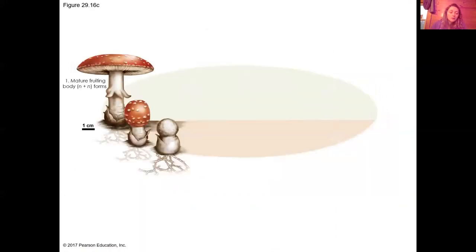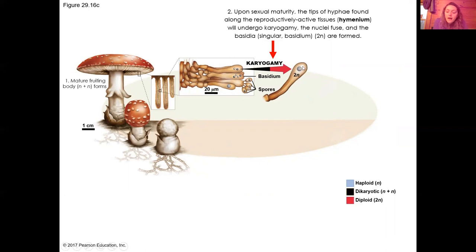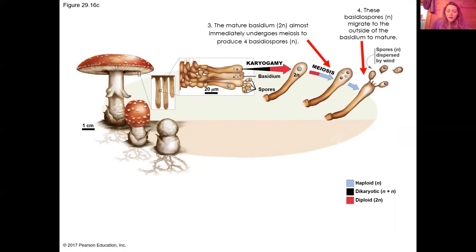The mature form of Basidiomycota is n+n, so they spend most of their adult life in the n+n stage. Along the reproductively active tissues — the hymenium — they undergo plasmogamy, and then karyogamy. This happens on each basidium (singular) or basidia (plural), and that forms the 2n zygote. This is all happening along the wall of each gill; there is a hymenium layer providing a large amount of reproductively active surface area under each mushroom.